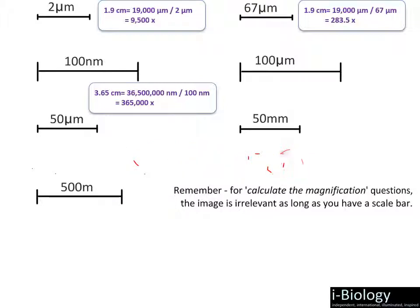Nanometers are used for things inside of the cell — like the mitochondria, the membrane, the ribosome, or the Golgi apparatus — or when looking at viruses. Micrometers are used when looking at whole microscopic cells like bacteria, animal cells, or plant cells. For the next example, the same 3.65 centimeters converts to 36,500 micrometers, divided by 100 micrometers, giving 365 magnification.